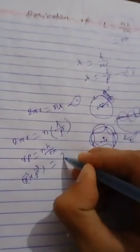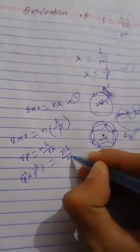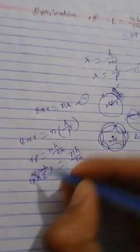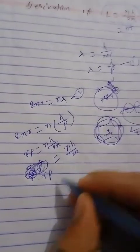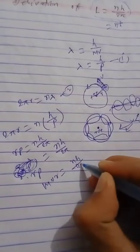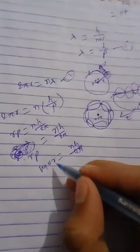We are simply writing the magnitude. So rp can also be written as mvr equals nh by 2π. And this mvr is represented by L, which is the angular momentum. So L equals nh by 2π.